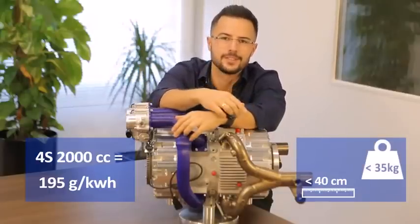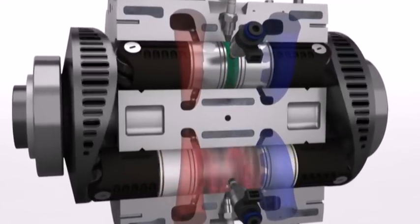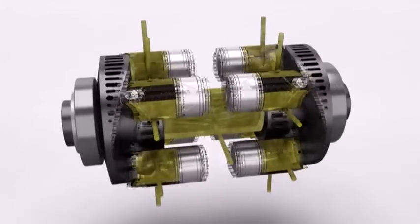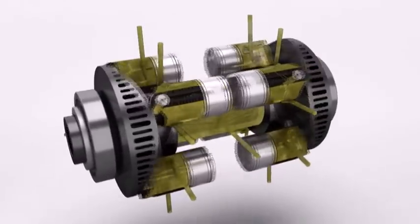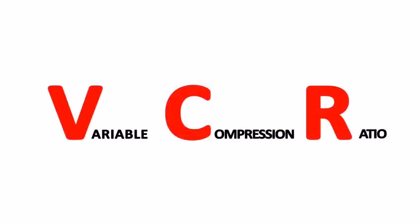And the advantages don't end there. The thing that sets the one-stroke engine in a completely different league is the fact that it has, at its core, a revolutionary feature that the main car manufacturers have been attempting for decades now. The variable compression ratio system. To do justice to the magnitude of this breakthrough would take an entire new video, so let me just show you how simply beautiful it is.